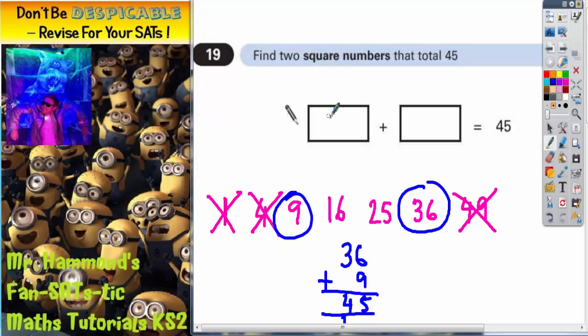So, all I need to write in here is 36 add 9. It doesn't matter which way around you do it, as long as those are the 2 numbers that you've chosen.